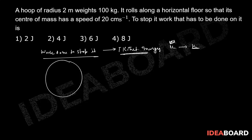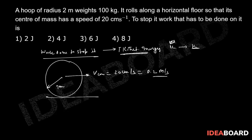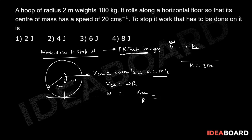The hoop has radius 2 meters, and the velocity of the center of mass, vcm, is 20 centimeters per second, which equals 0.2 meters per second. Since it rolls along the horizontal floor, we use the rolling condition: vcm = ω × r. So omega equals vcm divided by r, which is 0.2 divided by 2, giving us ω = 0.1 radian per second.